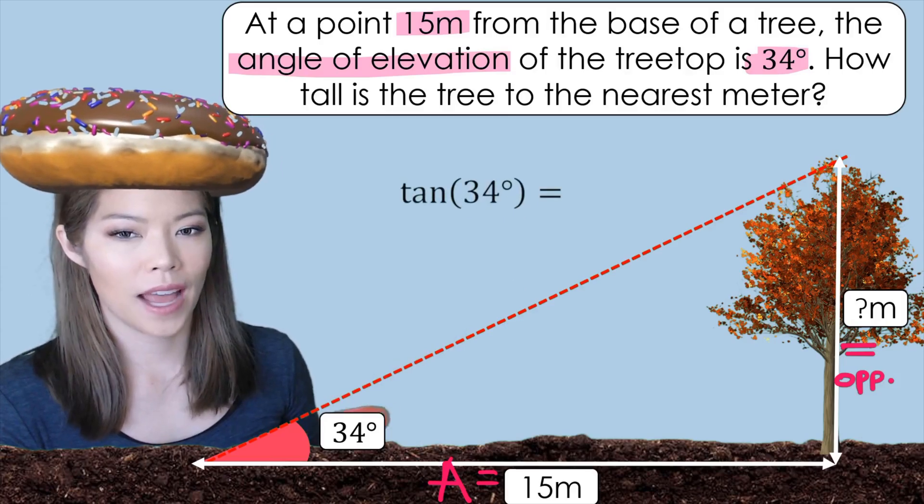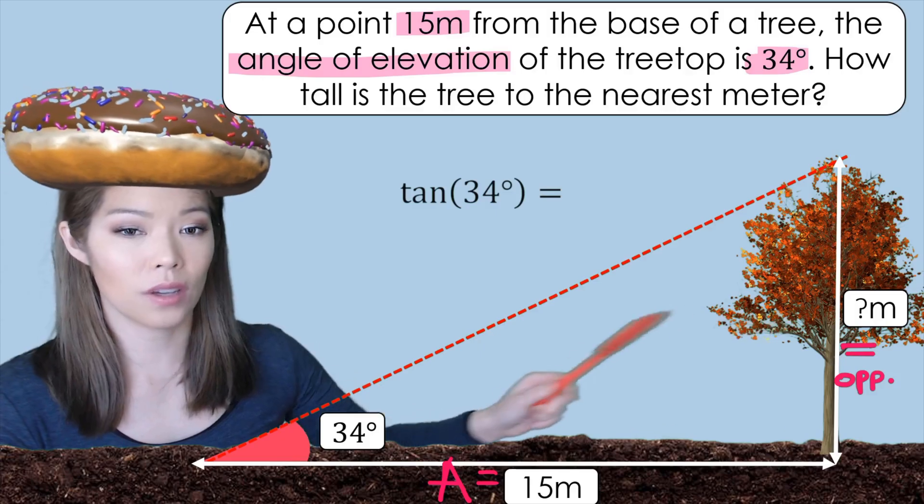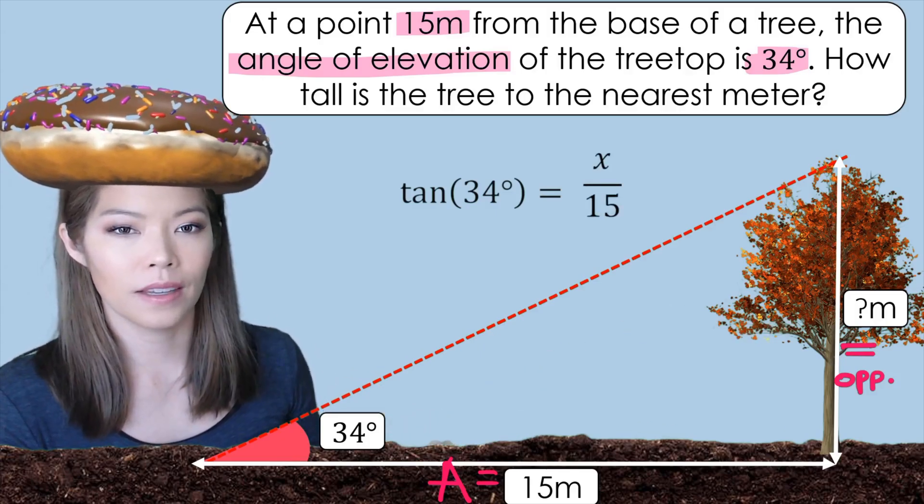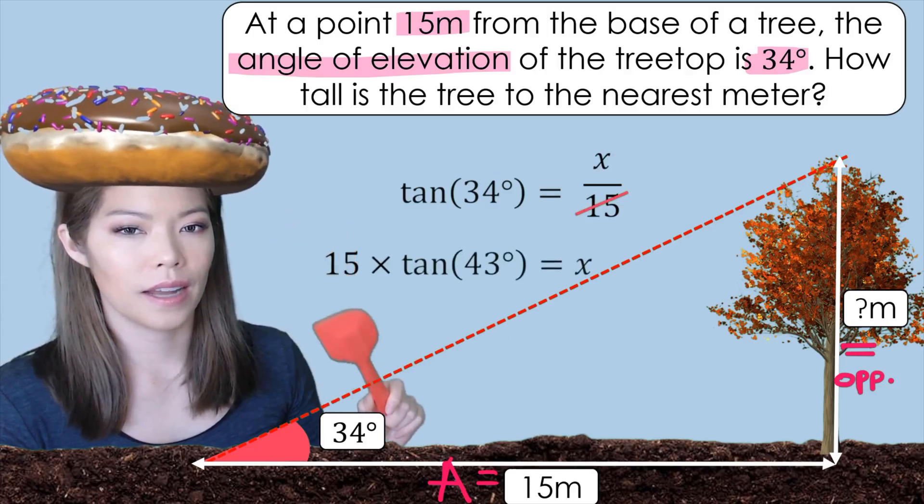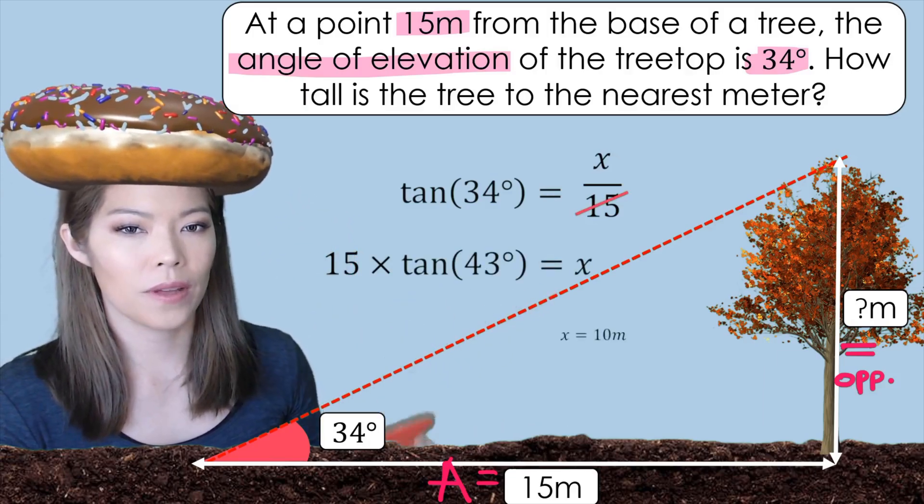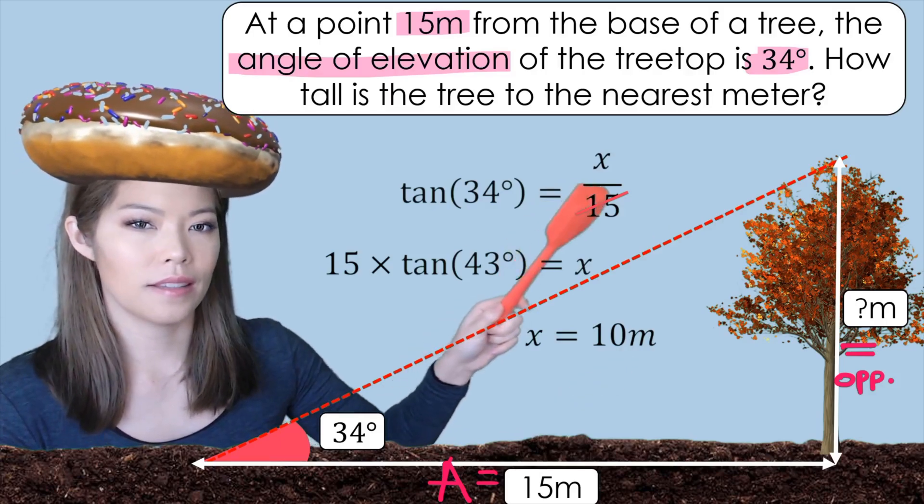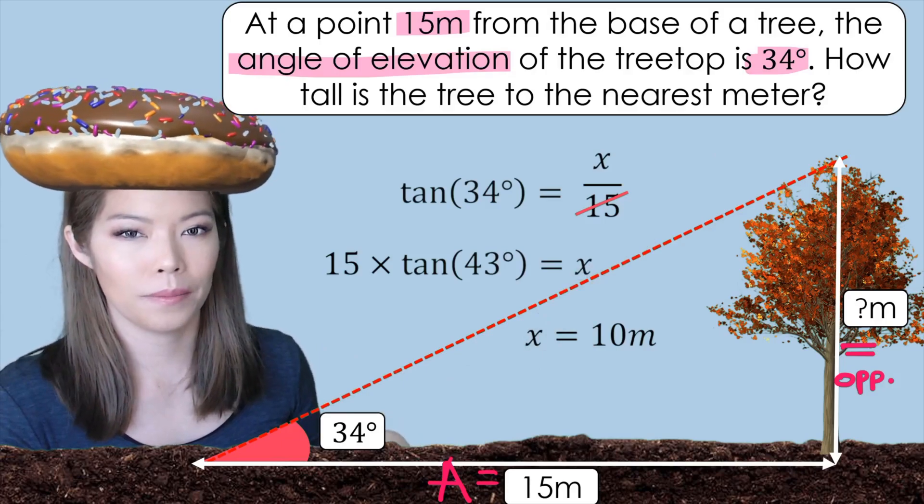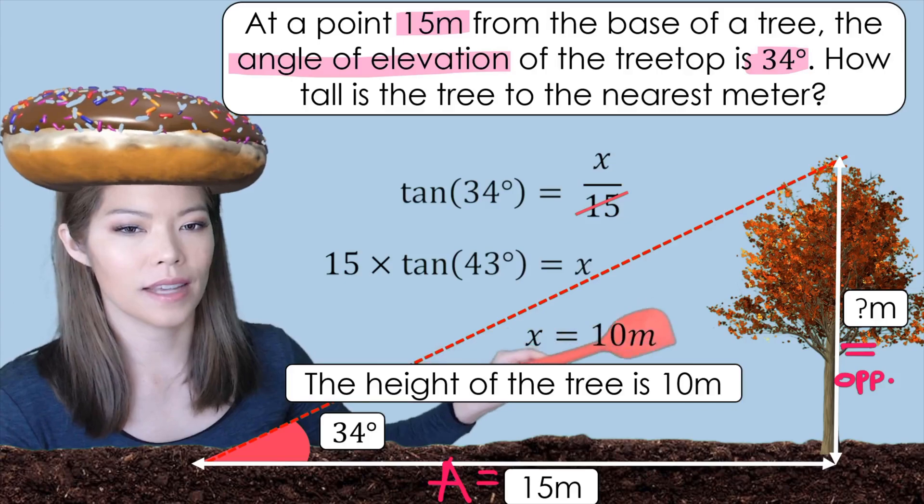So now we have tan of the angle 34 is equal to opposite. Let's call that x over 15 adjacent. To get rid of the 15 we bring it over by multiplying. Now we put that in the calculator and we get x equals 10 meters. And it says nearest meter so our answer should be 10 meters. The height of the tree is 10 meters. Always write the sentence out.